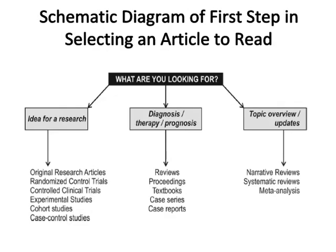Schematic diagram: the first step in selecting an article to read. This schematic diagram will help you decide the type of article to select. This flowchart is meant for one who has a specific intent of choosing a particular type of article, and not for one who intends to browse through a journal.